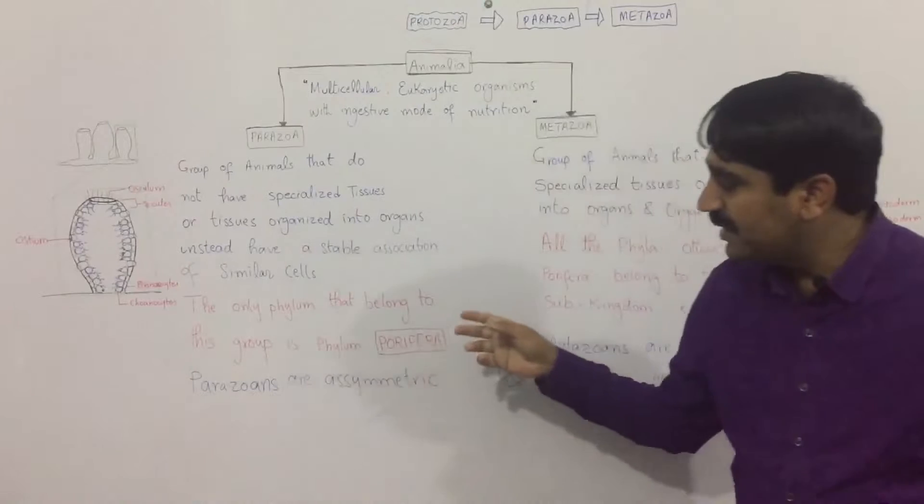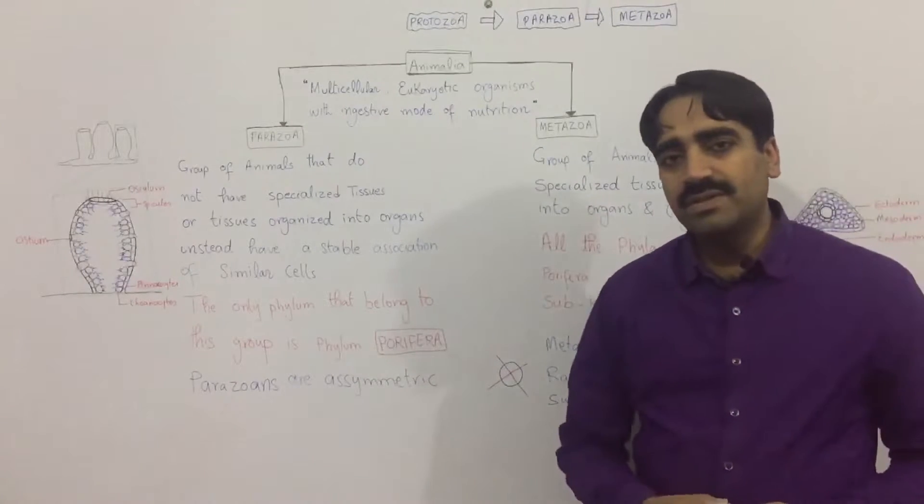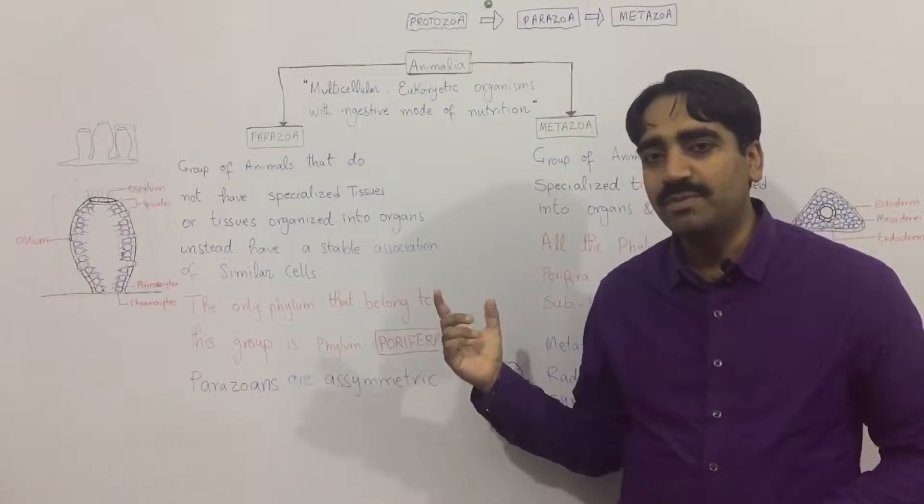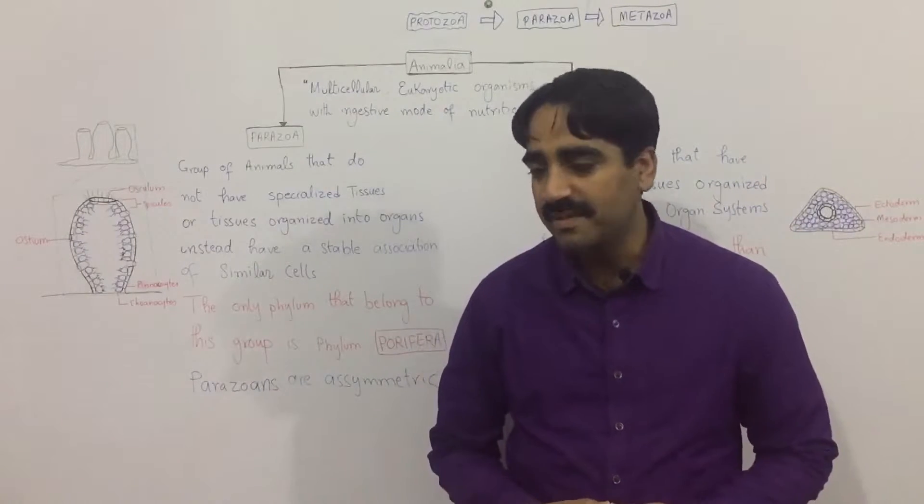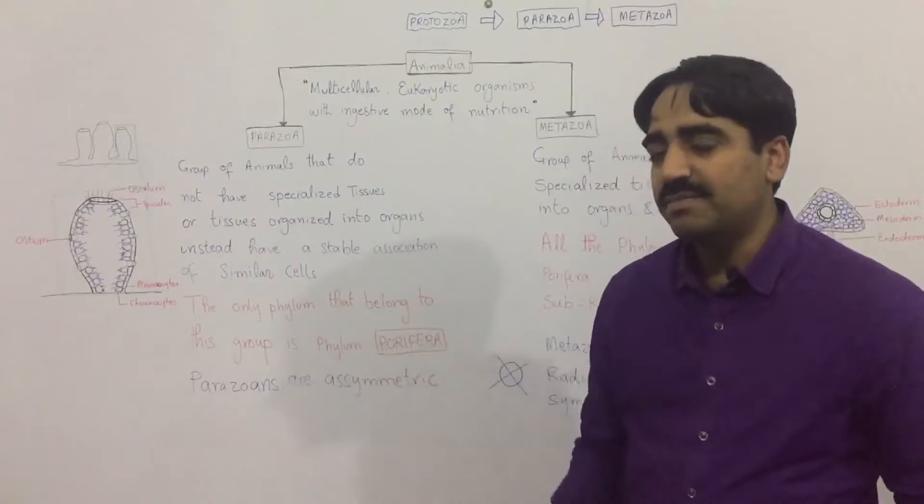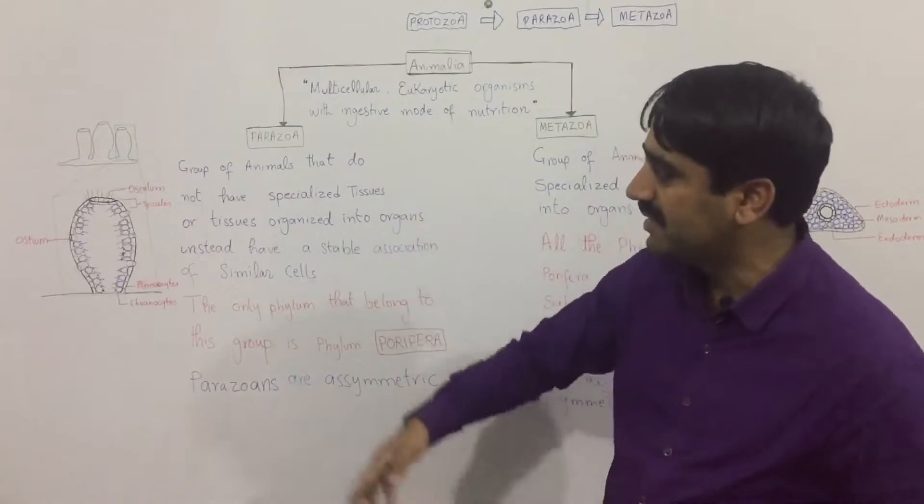Next, the only phylum that belongs to this group is the phylum Porifera, or commonly called sponges. They are not symmetric—they do not have any symmetry. As you can see over here, you cannot divide it into any plane of region.